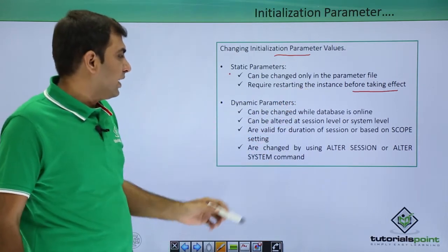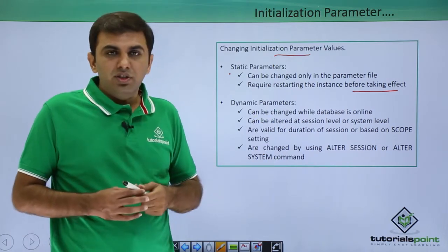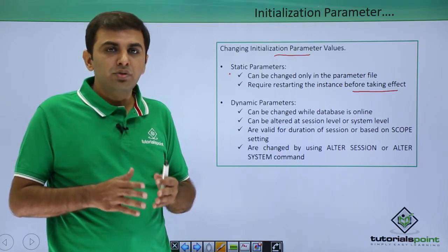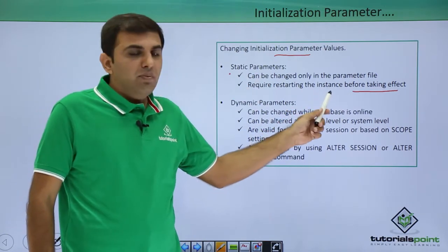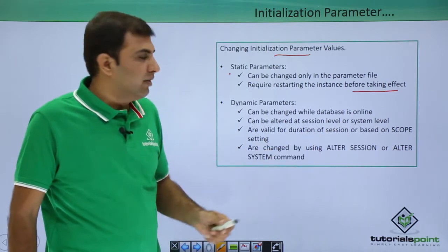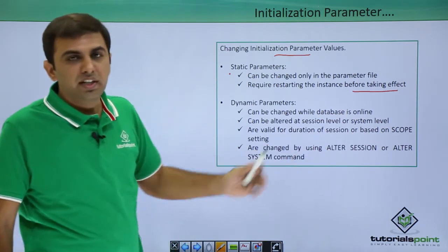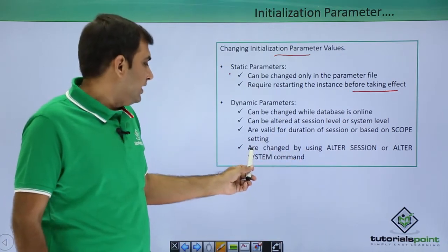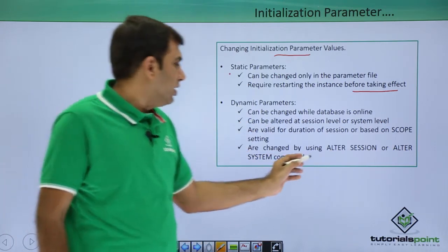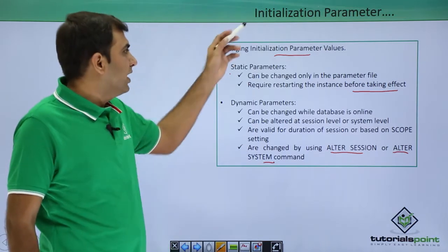A dynamic parameter can be changed while the database is online. When your database is up and running, if you want to change the value of a dynamic parameter you can change it immediately. For example, if you want to change the processes from 80 to 100 you can do that online — no need to shut down or start up your database. Dynamic parameters can be altered at session level or system level, valid for the duration of the session based on the scope setting. You can change them using the ALTER SESSION or ALTER SYSTEM command.